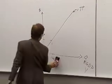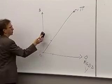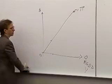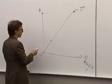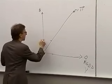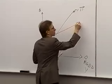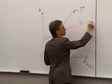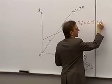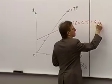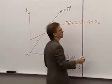We also put in a total expenditure curve. Total expenditures equal consumption plus investment spending plus government purchases plus net exports.